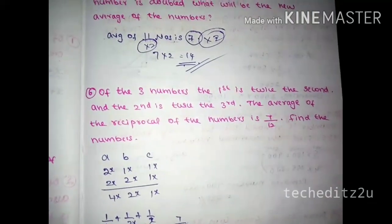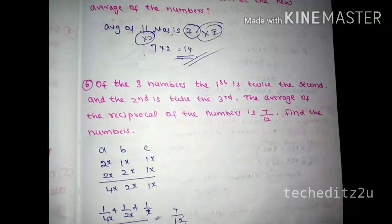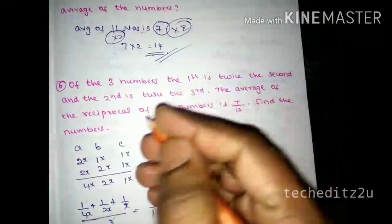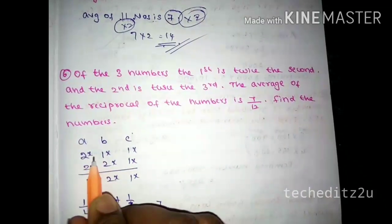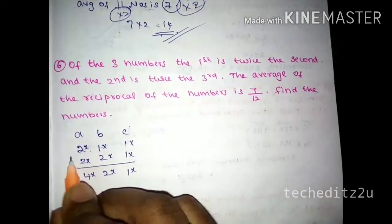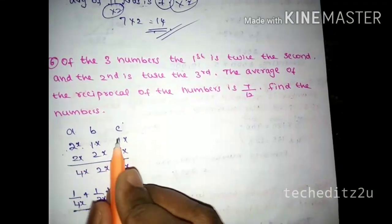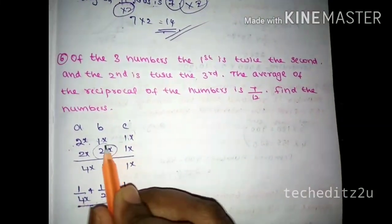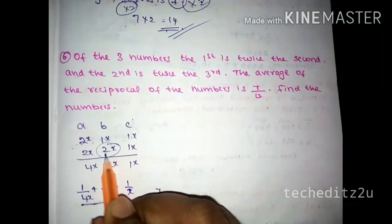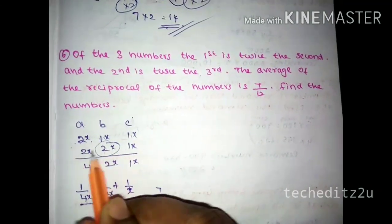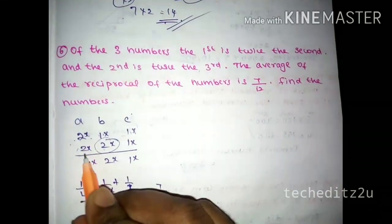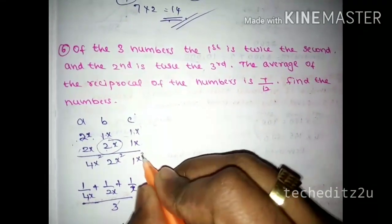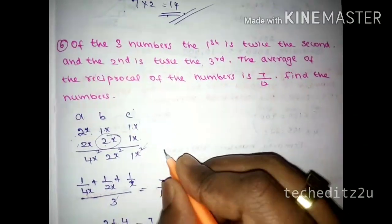Of three numbers, the first is twice the second and the second is twice the third. The average of the reciprocals of the numbers is 7 by 12. Find the numbers. First is twice the second: first equals 2x. Second equals 2x divided by 2. The numbers are 4x, 2x, x — so the ratio is 4:2:1.